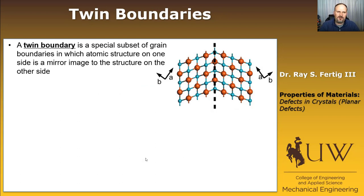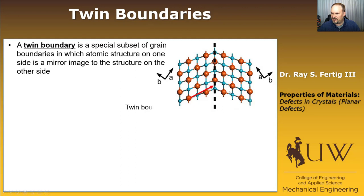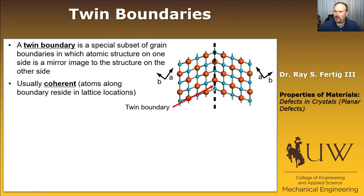Another type is a twin boundary, which is a special subset of grain boundaries. It's the case where the atomic structure on one side is the mirror image of the other, as shown here. If the dashed line — the twin boundary — were a mirror, you'd see exactly what's on the other side. Notably, the atoms don't appear to be in disorder at this boundary. Twin boundaries are called coherent, meaning the atoms on the boundary actually reside properly in their lattice structure, and those lattice structures just happen to match up along the boundary.